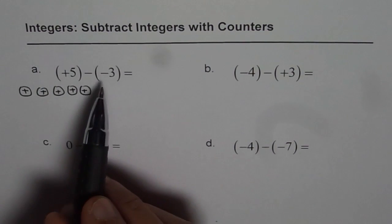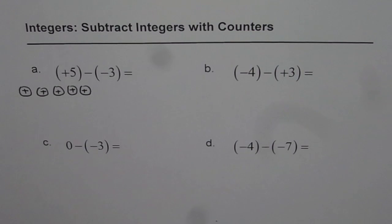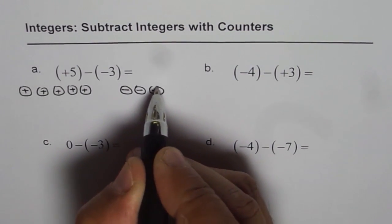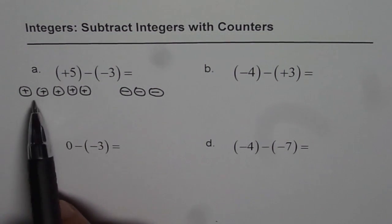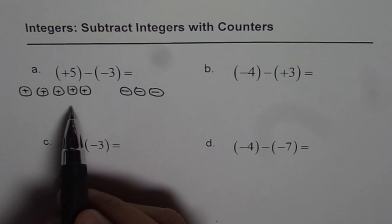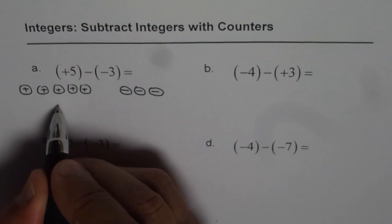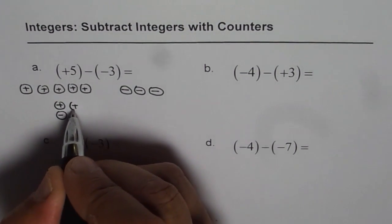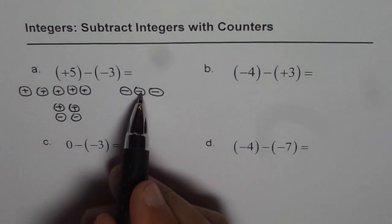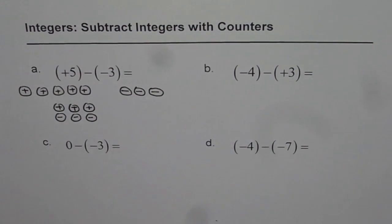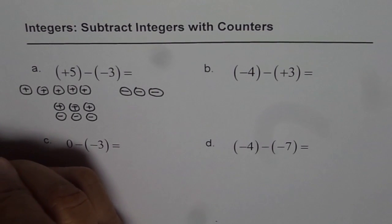Now from this group I have to take away 3 negative counters. Let me first draw the 3 negative counters: 1 negative, 2 negative and 3 negative. But as you can see we really do not have any negative counters on the left side, so we cannot take away negative counters. What we can do is we can add some zeros. Zeros mean combination of plus and minus. I need 3 zeros, since I have to take away 3 negatives. So these are my 3 zeros — we have added 3 zeros.